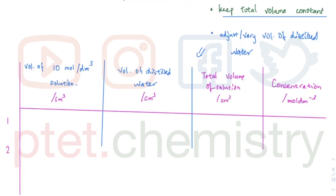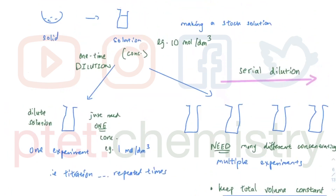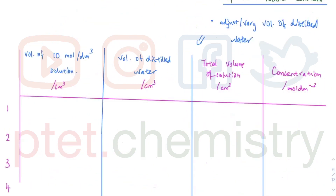I want to focus on the skill first. For the first row: if total volume is 100 cm³ and volume of solution is 100, then volume of distilled water is zero — concentration stays 10 mol/dm³, which is the original. Of course with serial dilution we don't really include the original — it's just itself, nothing has changed. That's the starting reference point.